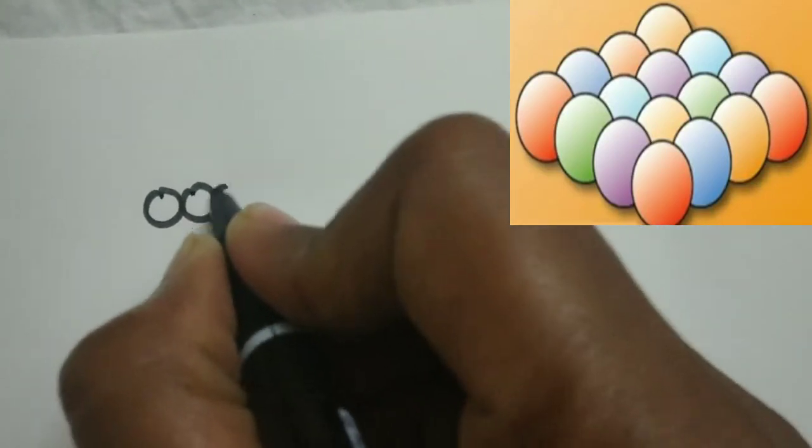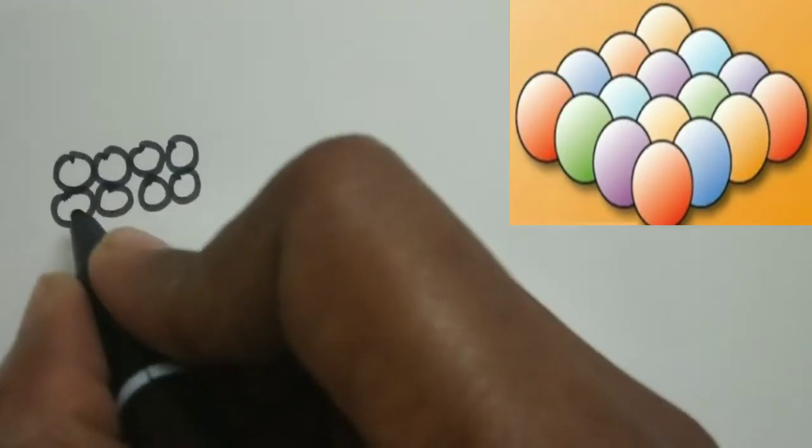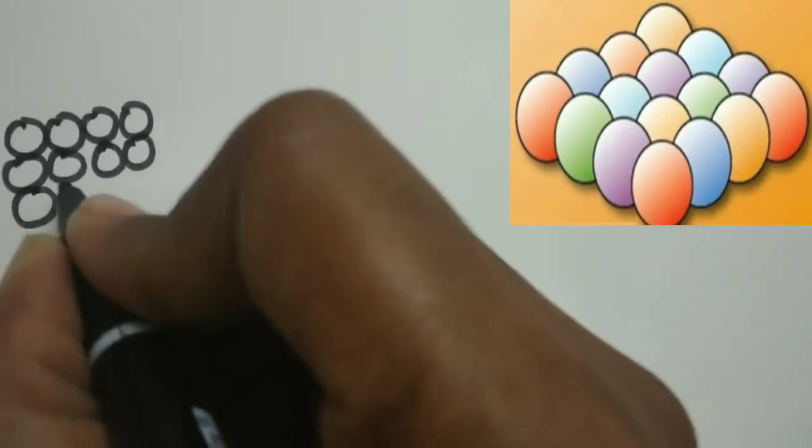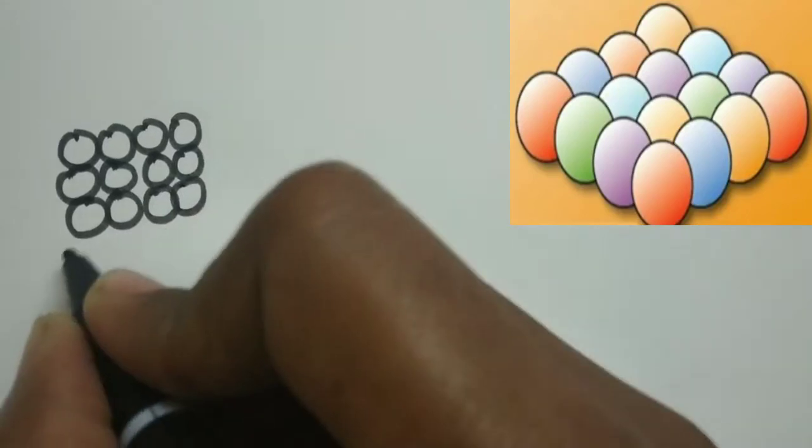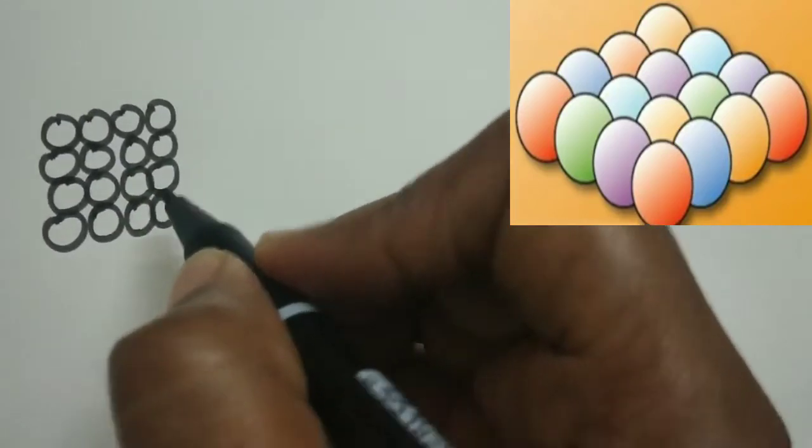So, totally how many number of balls are there in that square shape? If you count: 1, 2, 3, 4, 5, 6, 7, 8, 9, 10, 11, 12, 13, 14, 15, 16. Then only it will become square shape form.